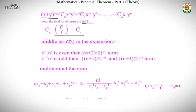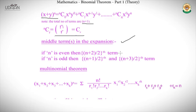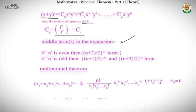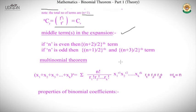Since there are n + 1 terms in the expansion, a natural question is whether there is a middle term. If n is even, then n + 1 is odd, so there is one middle term — the ((n+2)/2)-th term. If n is odd, n + 1 is even, giving two middle terms: the ((n+1)/2)-th and the ((n+3)/2)-th terms.